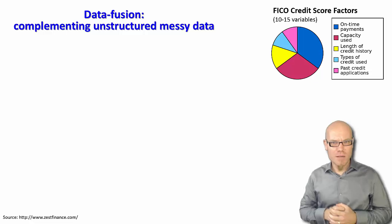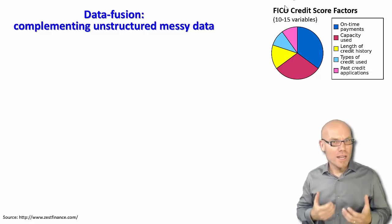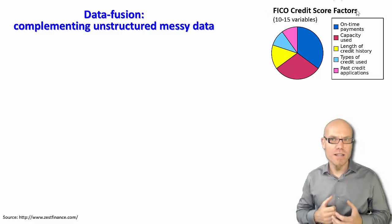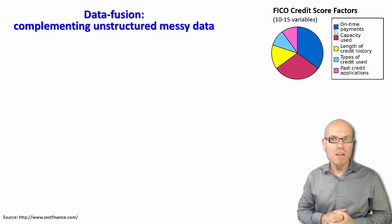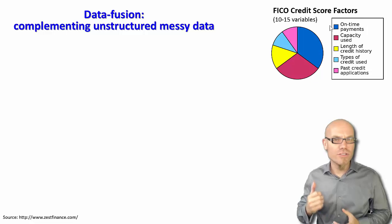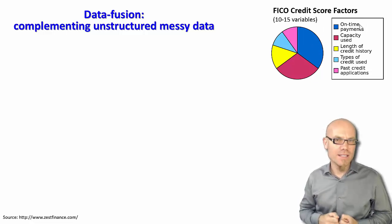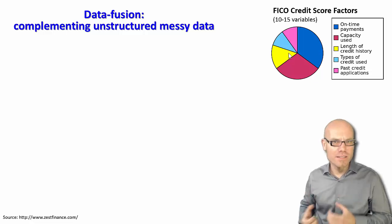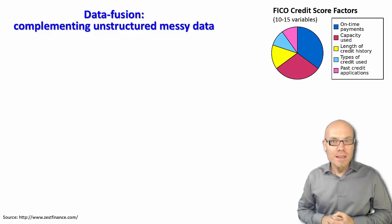Let's take one concrete example. Traditionally, if you want to get a credit or mortgage, you had a credit score, and traditionally credit ratings had just a handful — maybe a dozen — of variables. For example, whether you historically always paid your credit debts on time, and the length of your credit history — whether you have a long record or not.